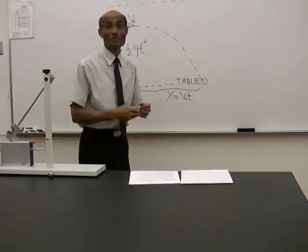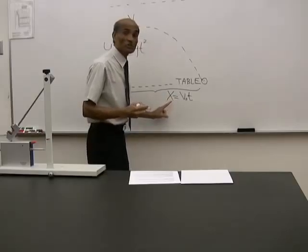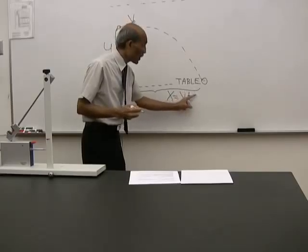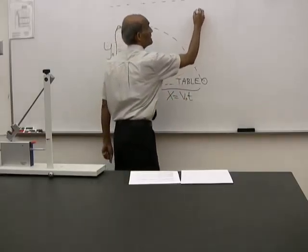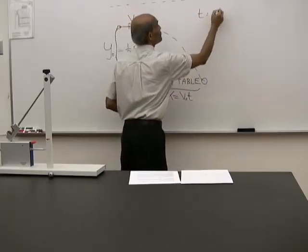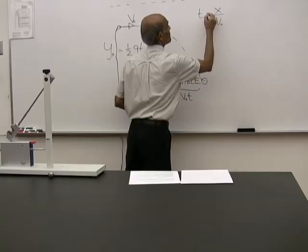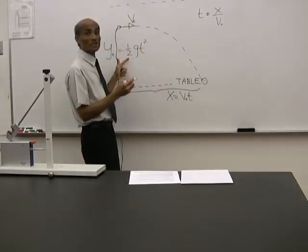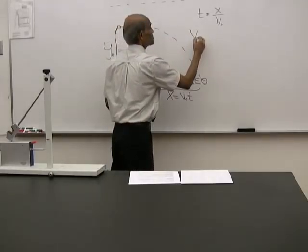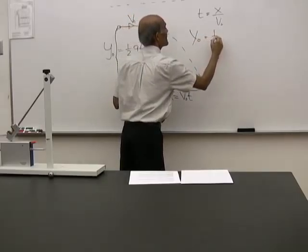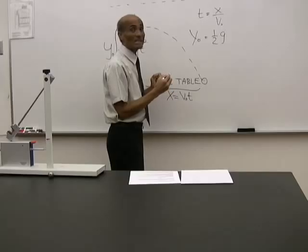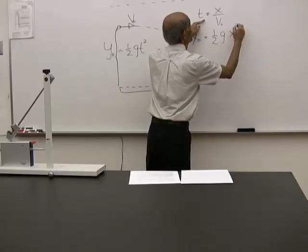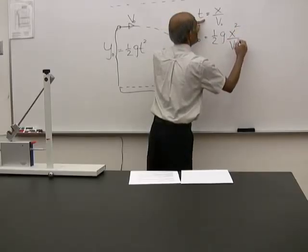If you have difficulty, I'm going to help you. What we need to do is use the first equation x equal to v0 t to solve for t. So t equals x over v0. Take this value of t into the second equation and write y0 equal to one-half g times t squared. t squared, therefore, will be x squared over v0 squared.